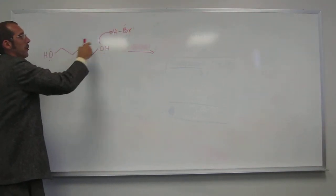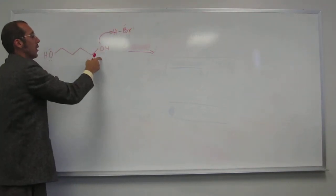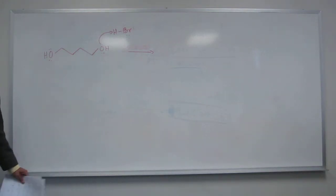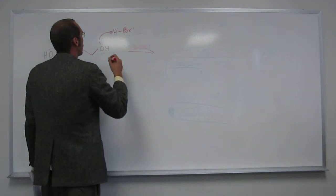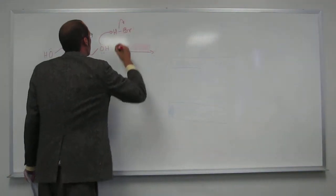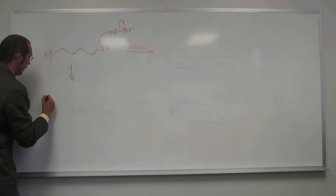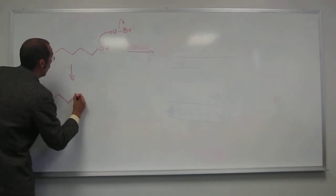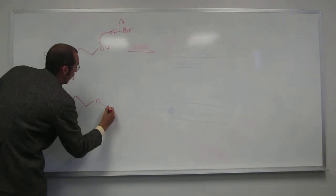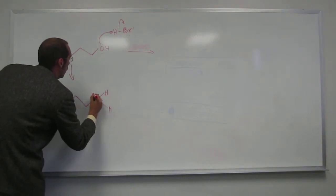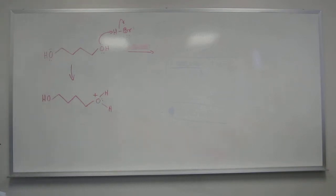So either one of the, of course the stronger acid, is going to look for a base. Either one of these is just as good a base because they're both hydroxyl groups. So that's going to be the first step, is that acid-base deprotonation. So you're effectively making the hydronium ion equivalent there.